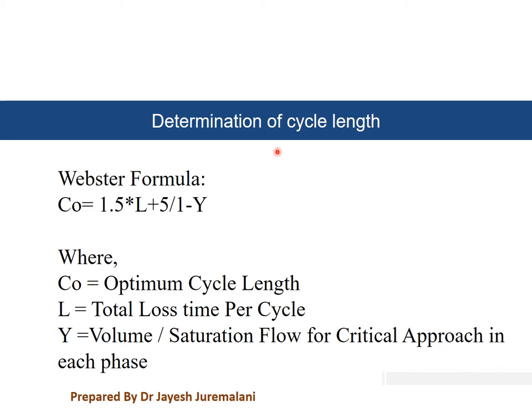The formula for determination of cycle length as per Webster is: CO = (1.5L + 5) / (1 - Y), where CO is the optimum cycle length, L is the total lost time — the time when the intersection is not utilized by any vehicle — and Y is the actual volume divided by the saturation flow.